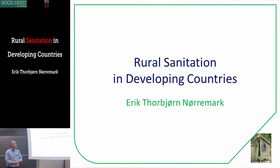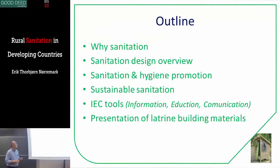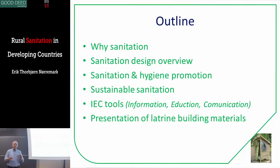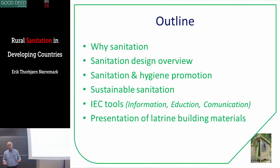Today we are going to talk about rural sanitation in developing countries. We want to know why we need sanitation, understand the objectives, then look into what kind of designs we have, the link between sanitation and hygiene, why it doesn't work just to build latrines, and why we need to combine it with hygiene education. We'll also cover sustainable sanitation, IEC tools — information, education and communication — a special toolbox for how to communicate with stakeholders, and a short presentation of latrine building materials so you can have some idea about the prices.